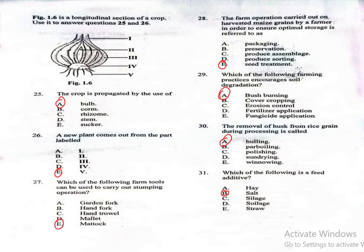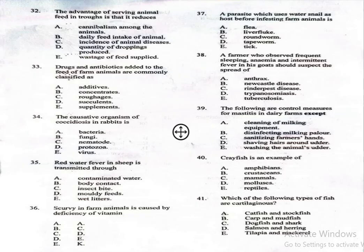Question 32: The advantage of serving animal feed in troughs is that it reduces: A, cannibalism among the animals; B, daily feed intake of animals; C, incidence of animal diseases; D, quantity of droppings produced; E, wastage of feed supplied. The correct answer is E, wastage of feed supplied.